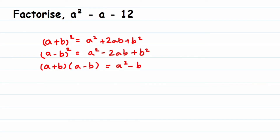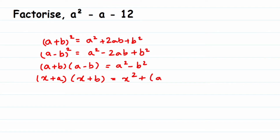The third identity is a plus b into a minus b, which equals a squared minus b squared. The fourth identity is x plus a into x plus b, which equals x squared plus a plus b into x plus ab.